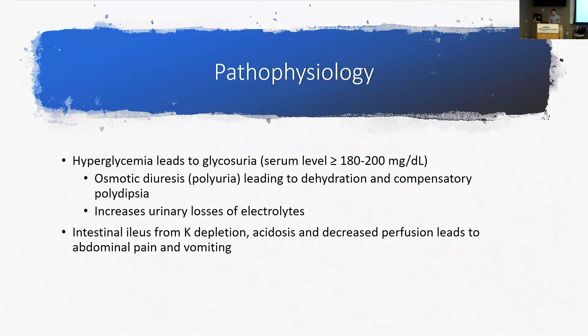The osmotic diuresis, along with free water, also pulls electrolytes, which is where you get significant electrolyte losses. Particularly potassium losses can lead to intestinal ileus. That, along with acidosis and decreased perfusion, leads to the abdominal pain and vomiting that we frequently see in these kids.